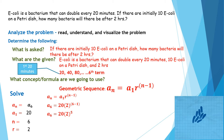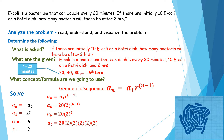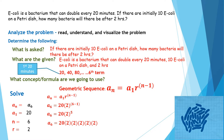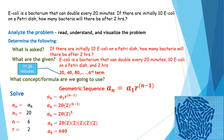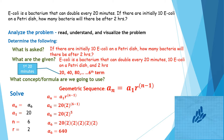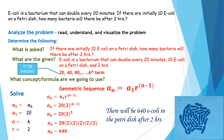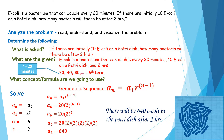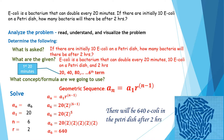Solving: a_6 = 20 × 2^5 = 20 × (2 × 2 × 2 × 2 × 2). Multiplying gives a_6 = 640. Therefore, there will be 640 E. coli bacteria in the petri dish after 2 hours.